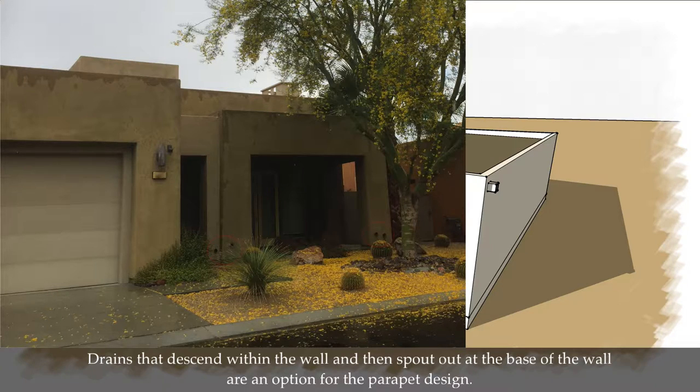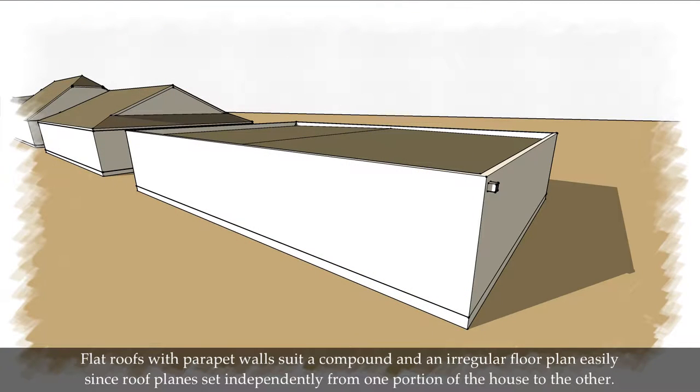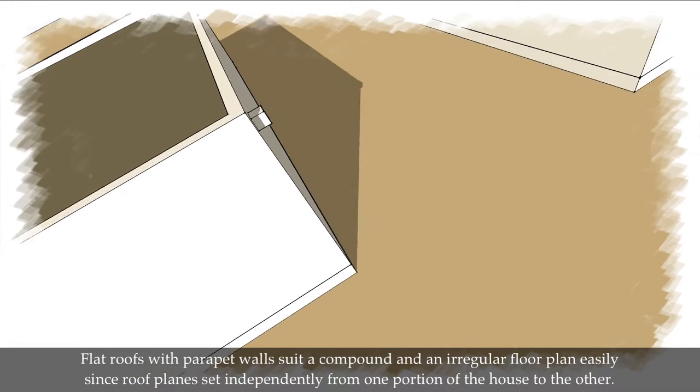Drains that descend within the wall and then spout out at the base of the wall are an option for the parapet design. Flat roofs with parapet walls suit a compound and irregular floor plan easily, since roof planes sit independently from one portion of the house to the other.